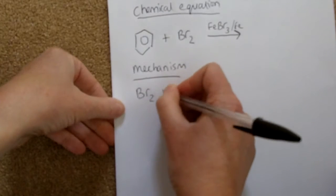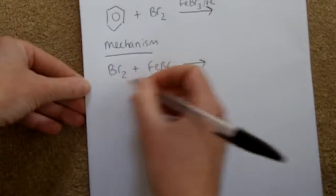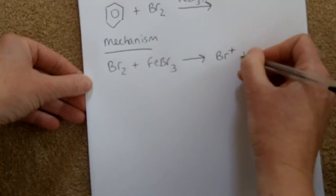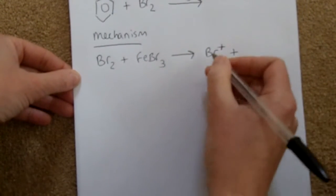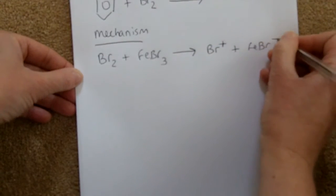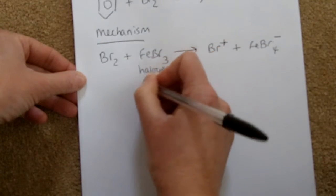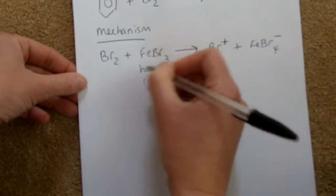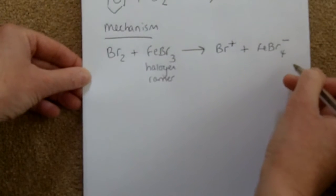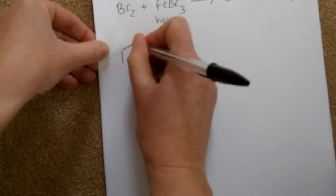The first step is that bromine reacts with the catalyst FeBr₃ to form an intermediate — a positive Br⁺ ion — and FeBr₄⁻. This catalyst is called a halogen carrier because it holds onto and carries the Br⁻.